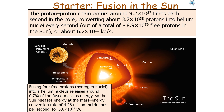Fusing four free protons (hydrogen nuclei) into a helium nucleus releases about only 0.7% of that mass as energy. In the proton-proton chain we get about 9.2 × 10³⁷ events each second in the core, converting about 3.7 × 10³⁸ protons into helium nuclei every second. This gives a mass defect of about 6.2 × 10¹¹ kilograms — we're converting about 4.26 million metric tons of hydrogen into energy, giving a power rating of about 3.8 × 10²⁶ watts.